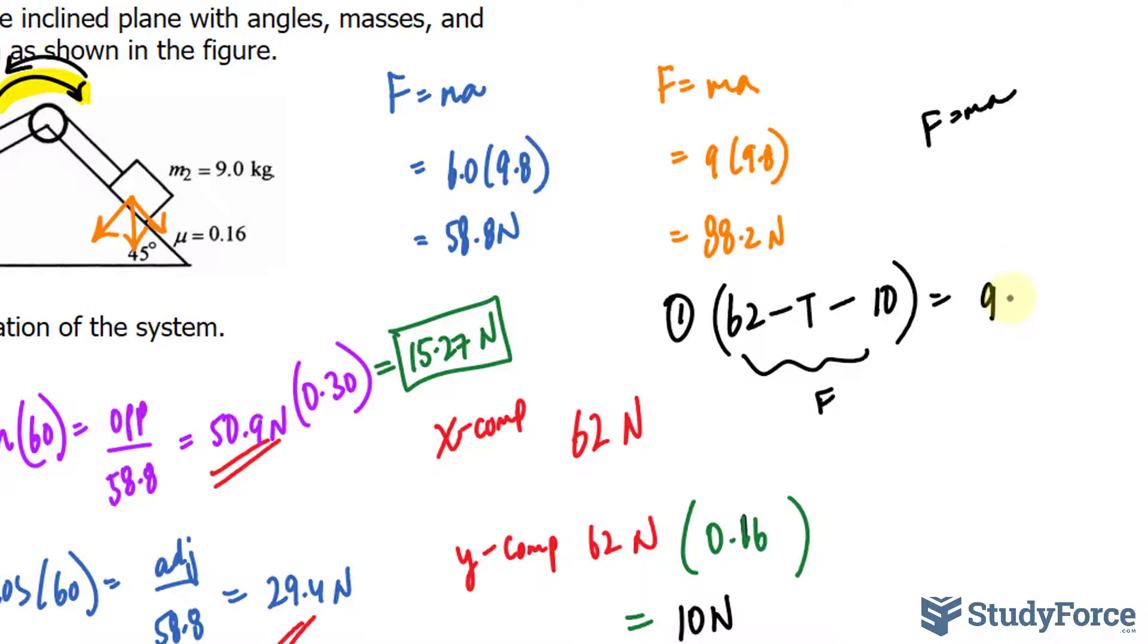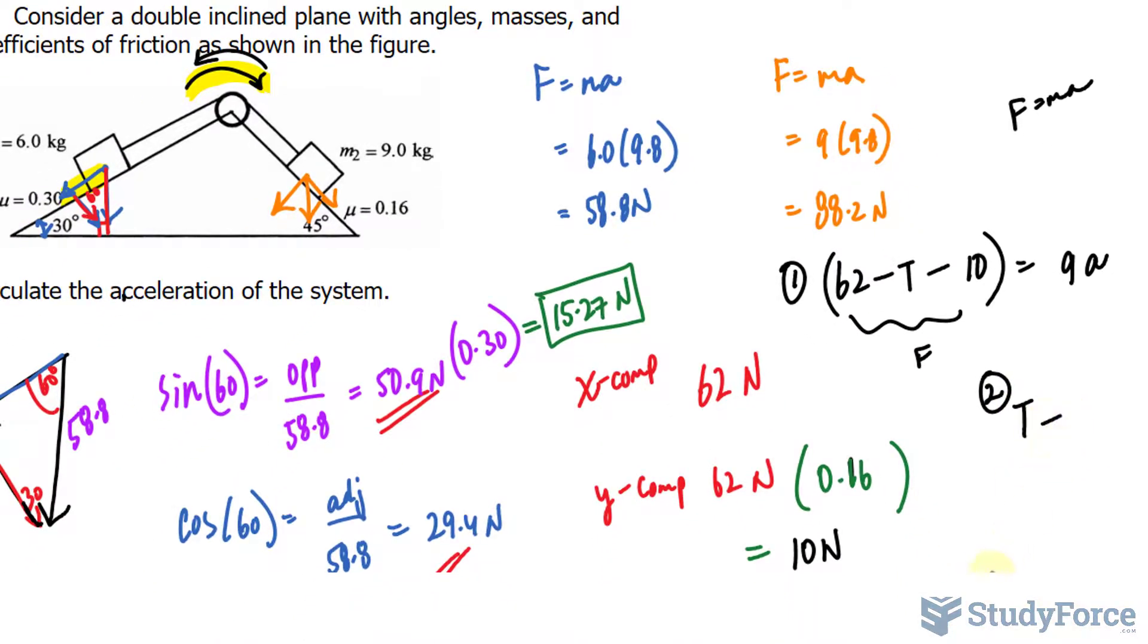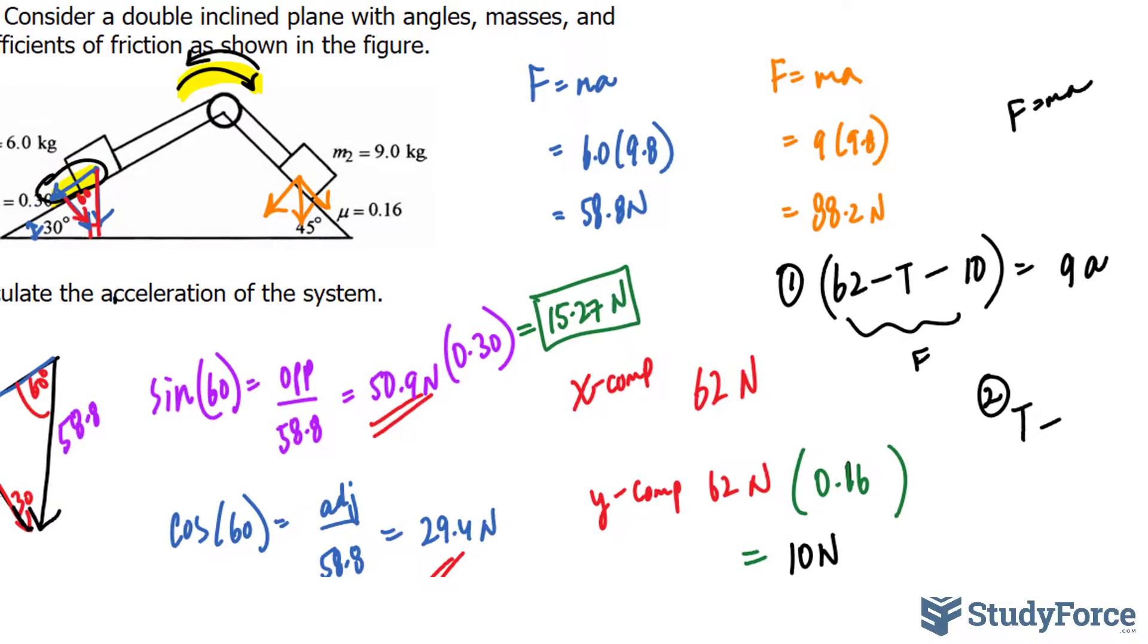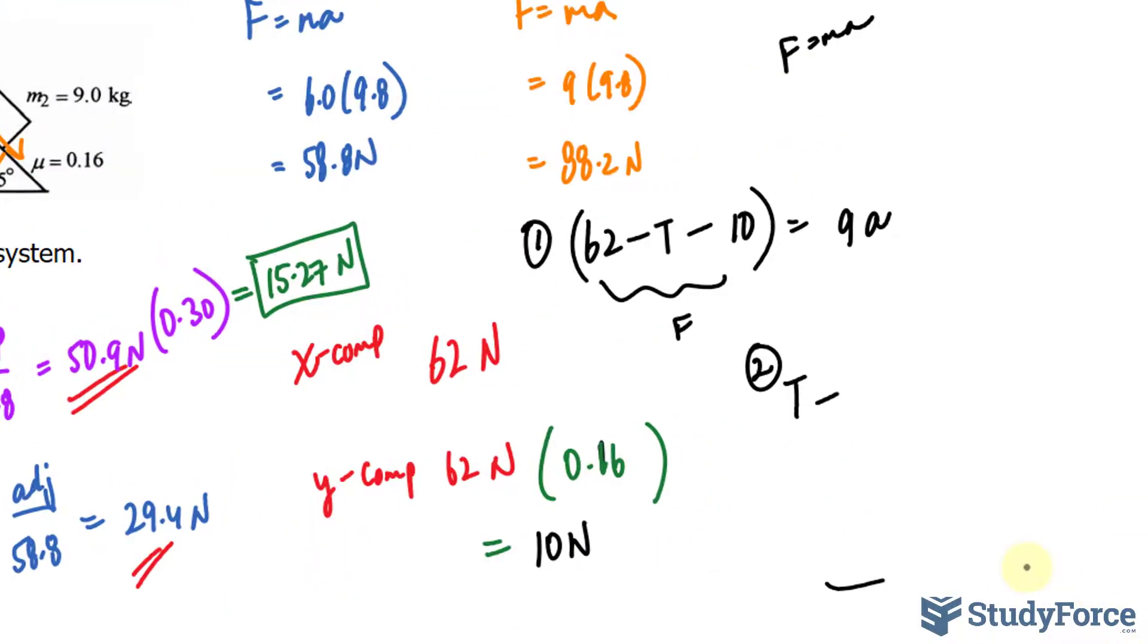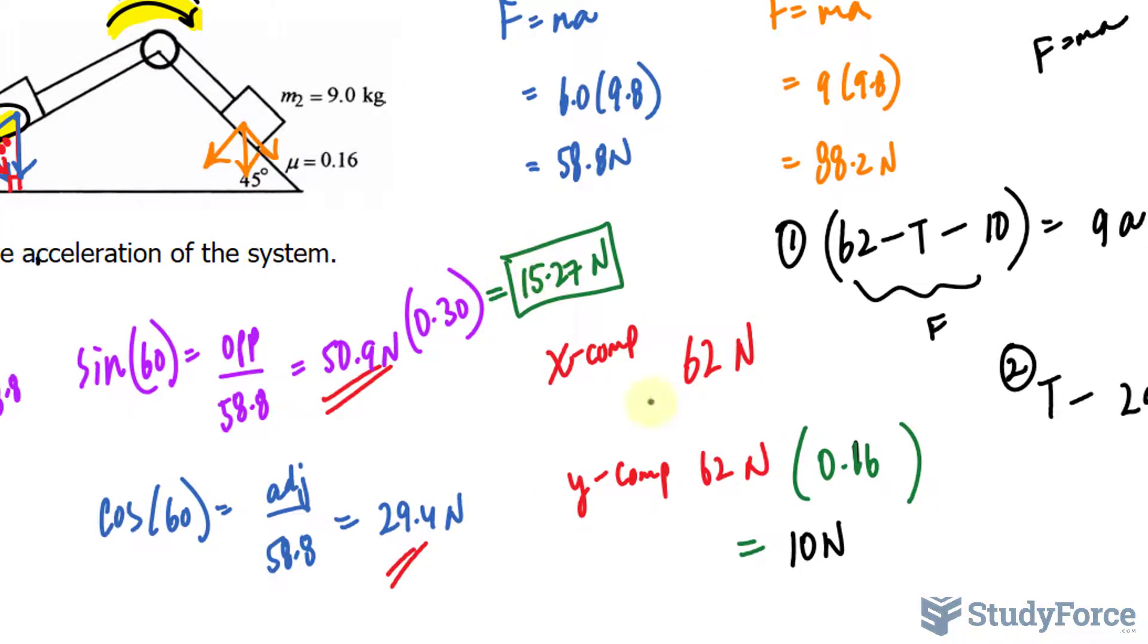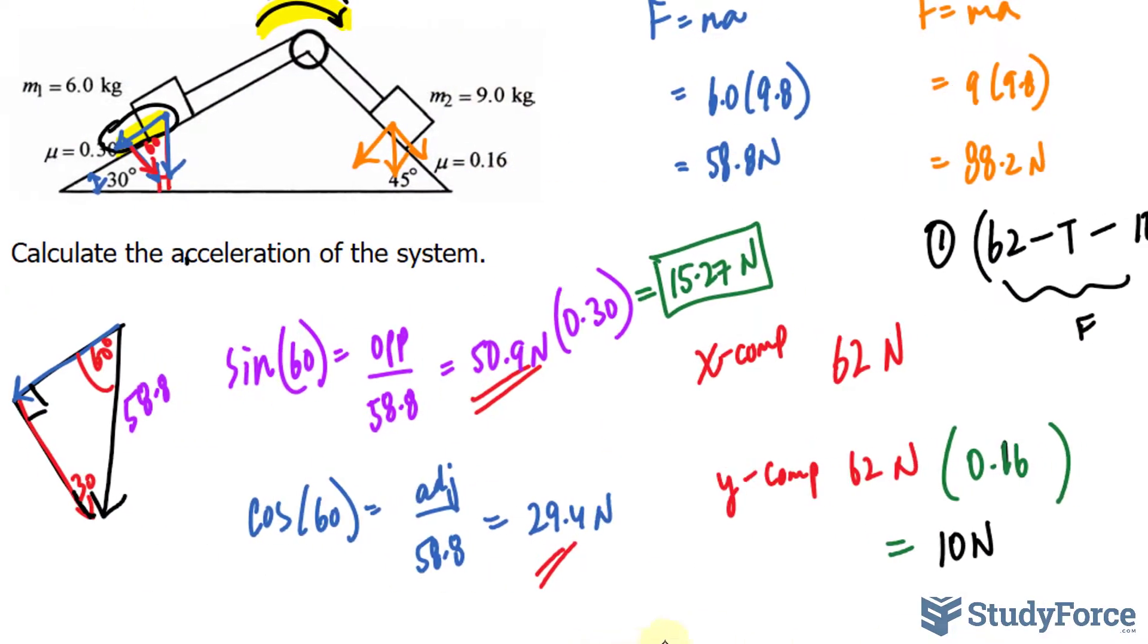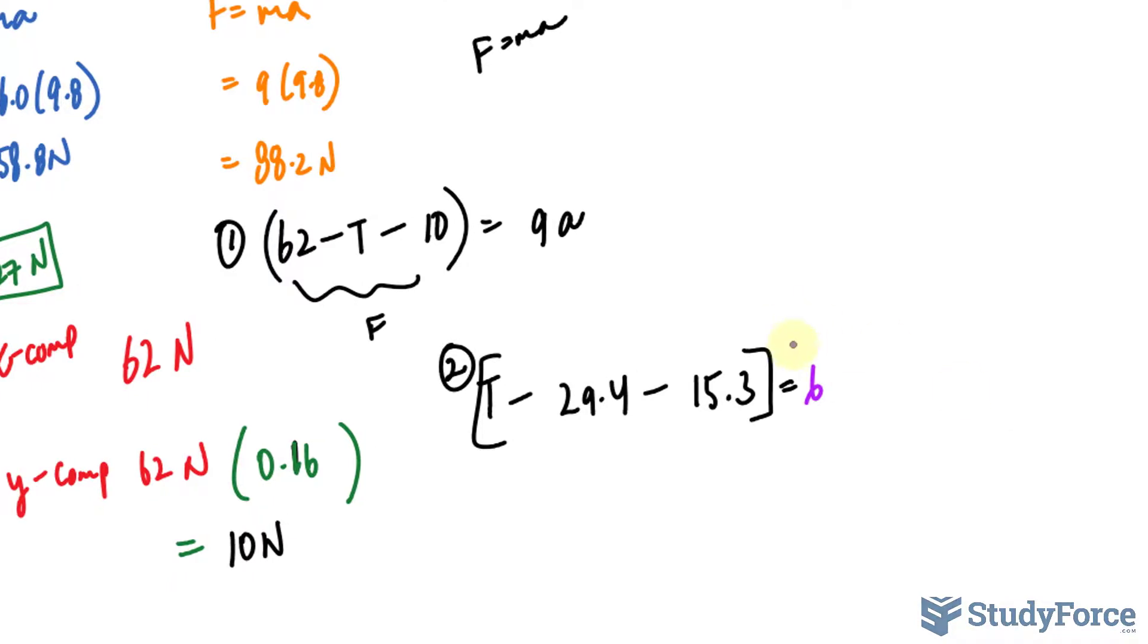The second equation will be T minus this magnitude, the one for this vector, which was 29.4, minus the vector that was perpendicular to the plane, which we found to be 15.27. That's when we took into account the coefficient of friction. So 15.27, let me just write down 15.3. If you're taking into account significant figures, it's going to affect you at the very end, but I'm just trying to show you the math and the science involved. Its mass was 6 times the acceleration that we are looking for.